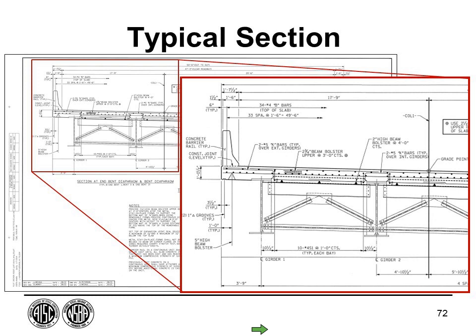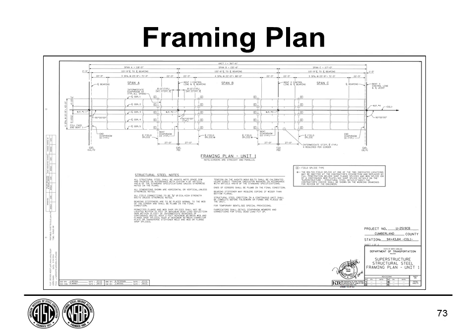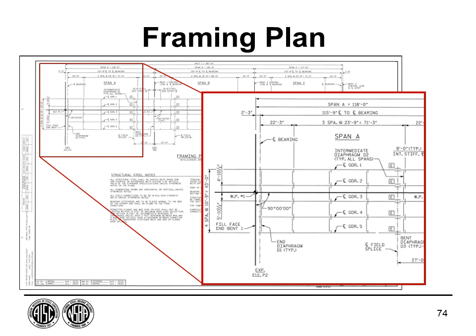The framing plan shows a plan view of the superstructure and where cross frames are located along the length of the girder. Key elements include span length, center line of bearing at abutments, girder spacing, individual girder locations, cross-frame locations, and field splice locations. Field splices connect two girder segments, typically located where flange or web sizes change, and their placement varies based on load conditions and span length.